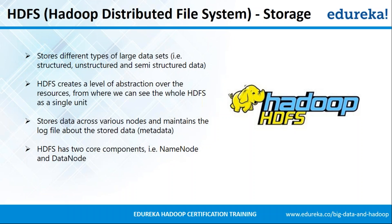Once you store data in HDFS, you can view the entire data as a single unit. HDFS stores data across various data nodes and maintains log files of what data is stored at which position. HDFS has two components: the Name Node and the Data Node. The Name Node manages the entire cluster and keeps the metadata of data stored in the data nodes. Data nodes are the slave machines — commodity hardware — which actually store the data. So HDFS solves the primary problem of storing big data.